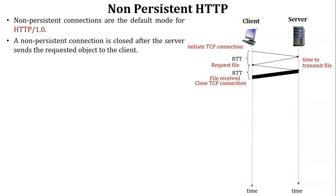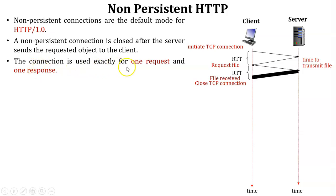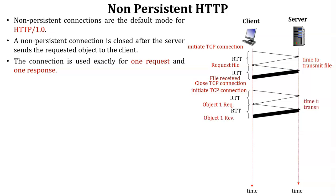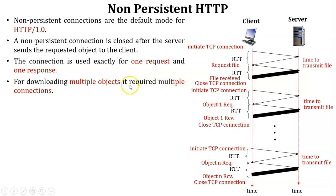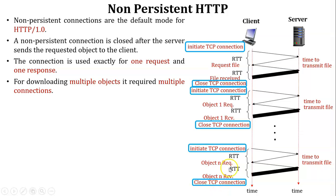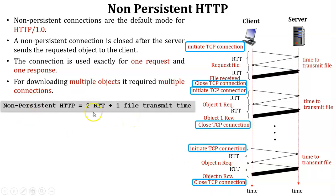In non-persistent HTTP, after every request-response, the TCP connection is closed. The connection is used for exactly one request and one response. If there is one object in a received file and the client wants to access it, the client initiates a TCP connection, the server accepts, the object is transferred, and the TCP connection is closed again. For downloading multiple objects, multiple TCP connections are required. The response time of non-persistent HTTP is 2 RTT plus 1 file transmit time per object.